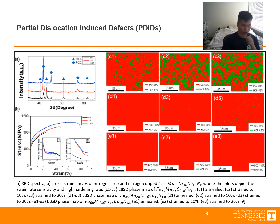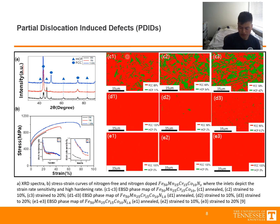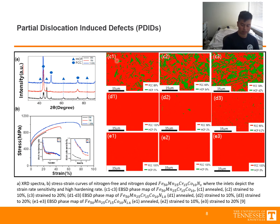For a review into partial dislocation induced defects, otherwise known as PDIDs, we will use a nitrogen-doped iron, manganese, chromium, cobalt composition as an example. Deformation proceeds via PDIDs such as extended stacking faults and deformation twin bands. PDIDs are thought to be the major carriers of plastic deformation in this composition.